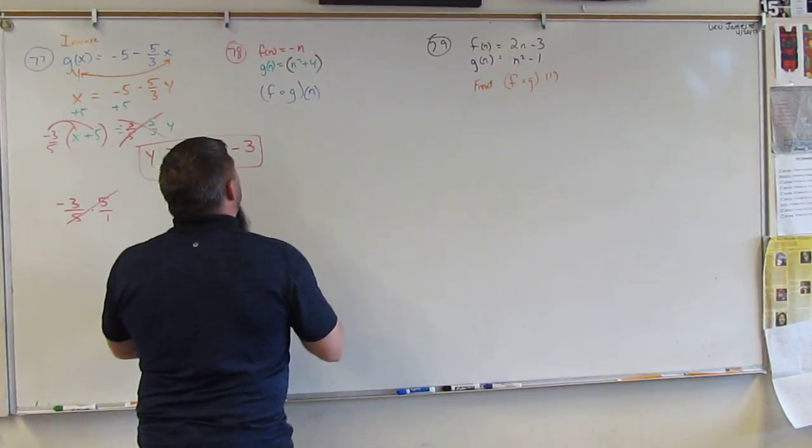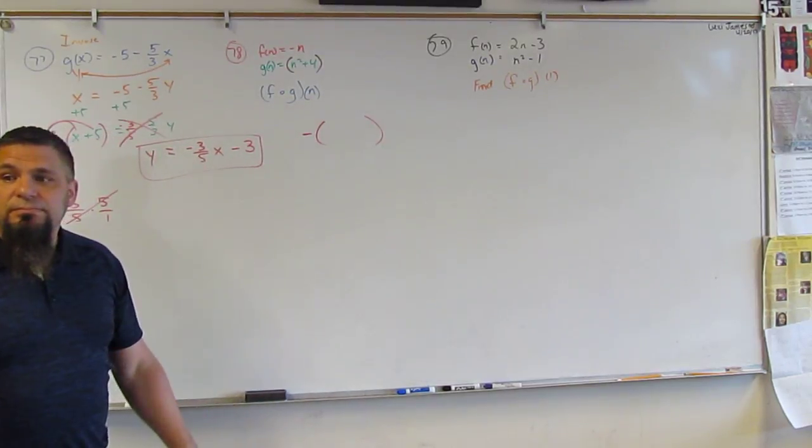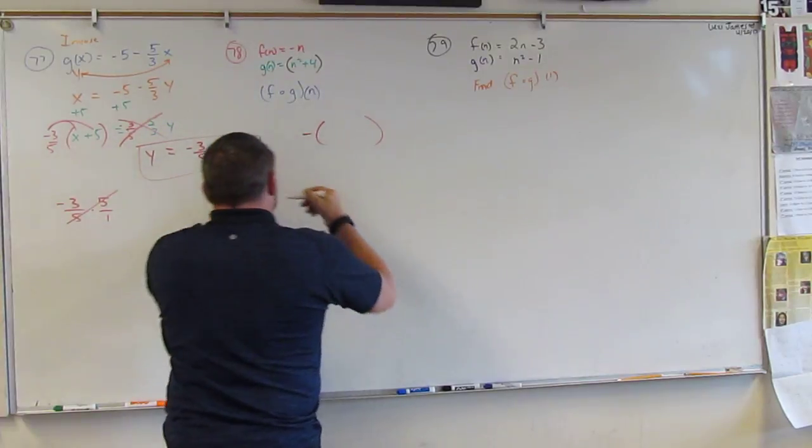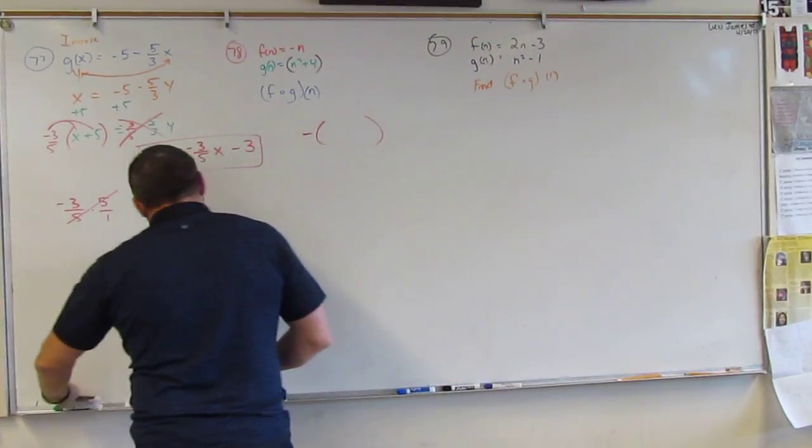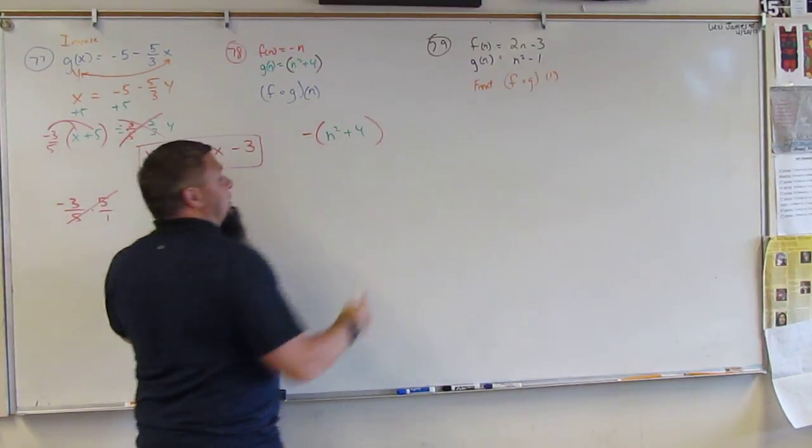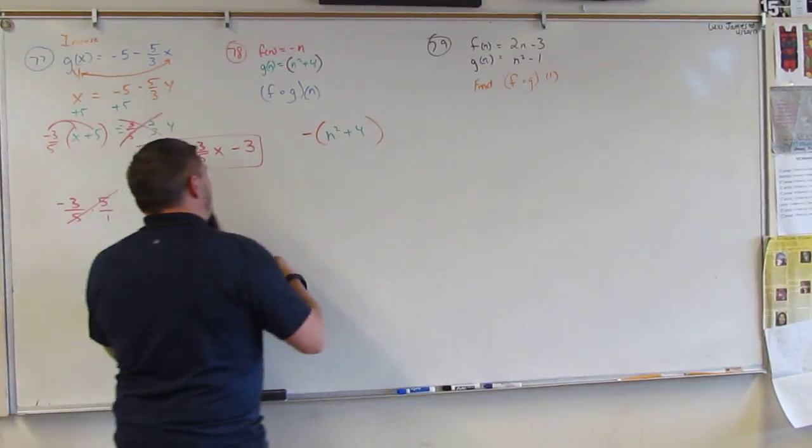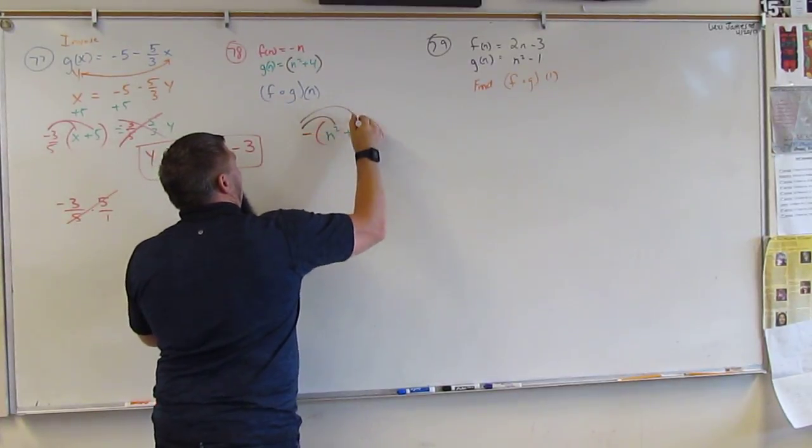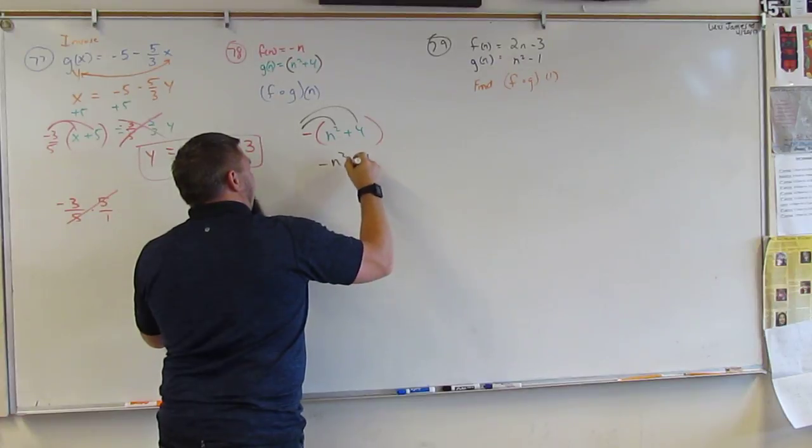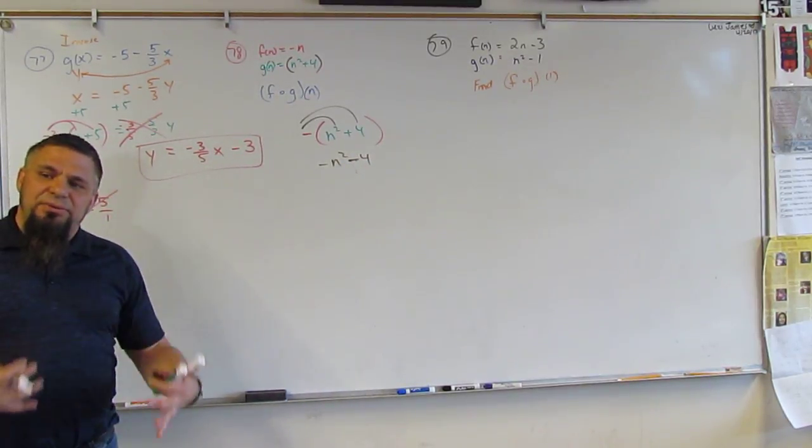And I'm going to plug it in to F. So, F is negative N, right? And the N, that's what this is. N squared plus 4. And so, what are you left with? Negative N squared plus 4. Oh, minus 4.